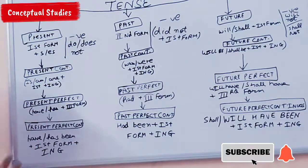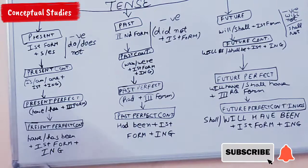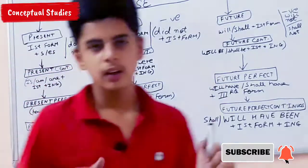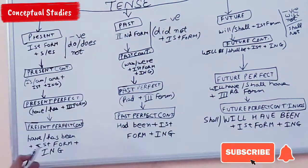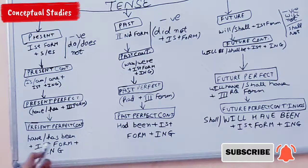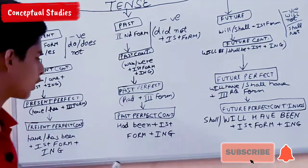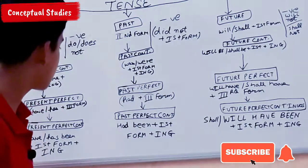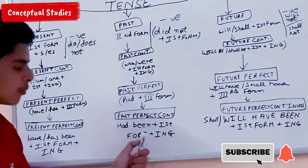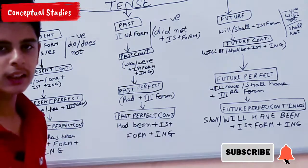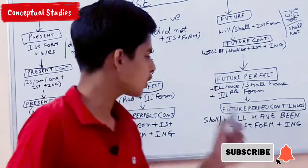For Present Perfect Continuous, 'has/have been' plus first form plus '-ing' is used. For example: 'He has been playing in the park.' For Past Perfect Continuous, 'had been' plus first form plus '-ing' is used — for example, 'He had been playing in the garden.'